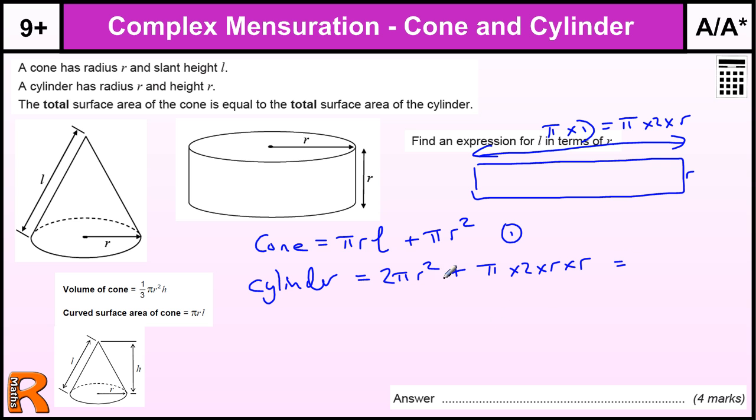And that gives us, I think any equivalent value there would give you a method mark. But this does simplify down. If I sort this out, R times R is R² times by 2 times by π. That is exactly the same as this in fact. So that is 2πR² plus 2πR² which is 4πR².